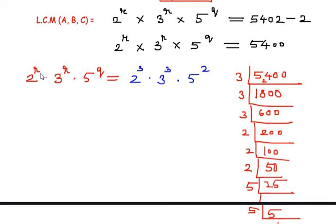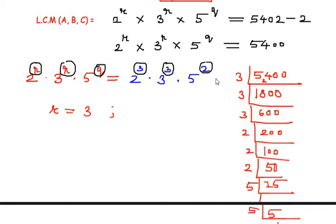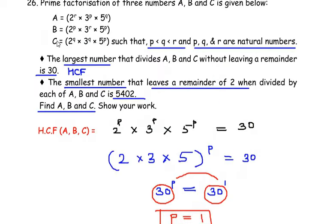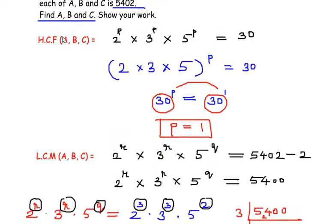Comparing the powers, we can see that r = 3 (from both the power of 2 and the power of 3), and q = 2 (from the power of 5). Combined with the value from HCF, we have p = 1, q = 2 and r = 3. Now we substitute these values into a, b and c.